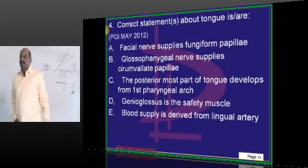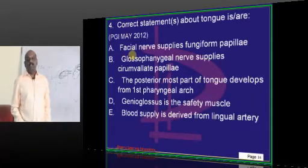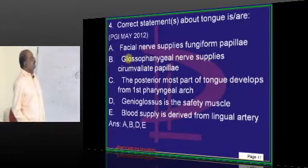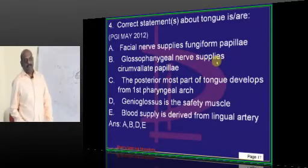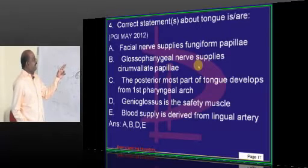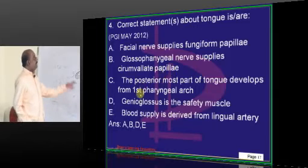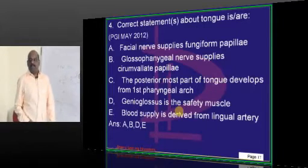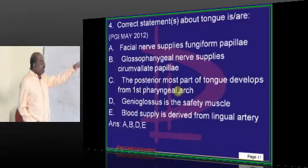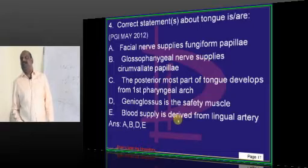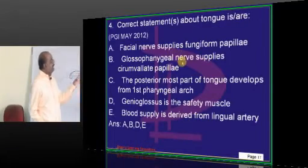About the tongue — what are all the true statements is a favorite question from PGI May 2012. The facial nerve supplies the fungiform papillae. The glossopharyngeal supplies the circumvallate papillae in the tongue. The genioglossus is also called the safety muscle, which is true. The blood supply of the tongue comes from the lingual artery. The posterior part of the tongue's derivation is a favorite examiner question.